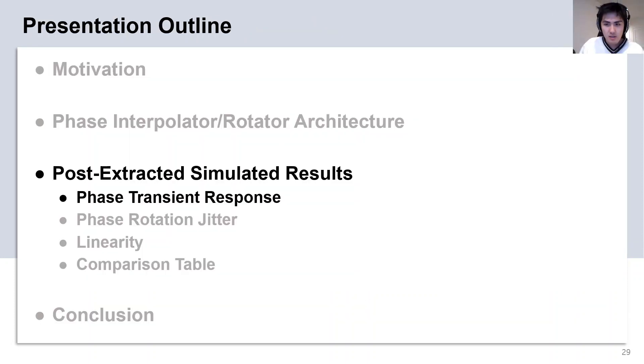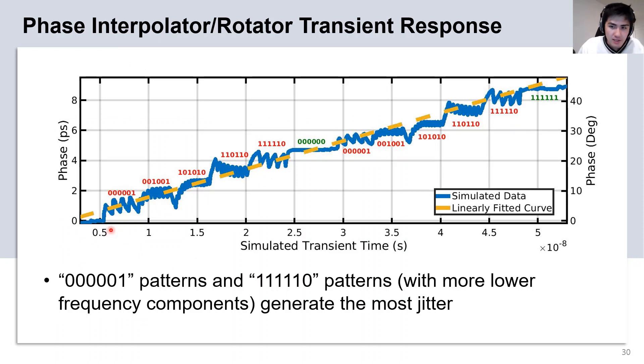Let's begin by looking at the phase transient response of the PI. Here, we perform a sweep of all 6 modulation patterns over 2 different coarse phase settings, which sums up to a total of 45 degrees of phase rotation. Note that the 000000 pattern and the 111111 patterns correspond to no modulation, hence why there is very little deterministic jitter at the output.